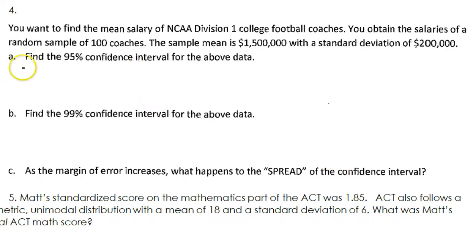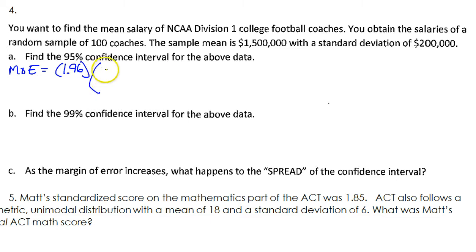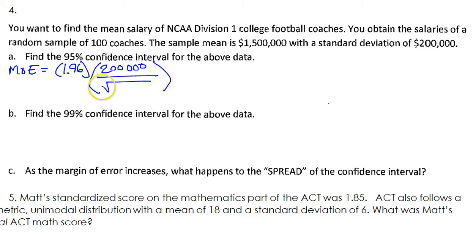You start by calculating the margin of error. So my margin of error is going to be that z-score, 1.96, times the standard deviation, 200,000, over the square root of the sample size — 100 coaches. This will give me my margin of error.